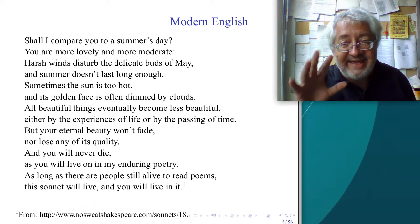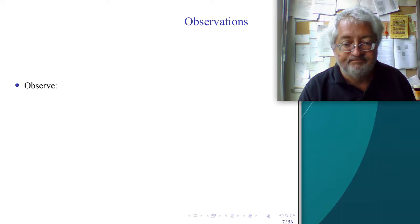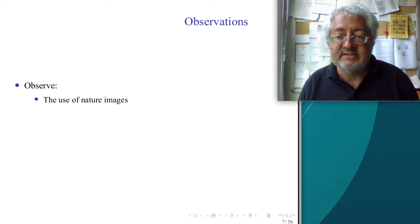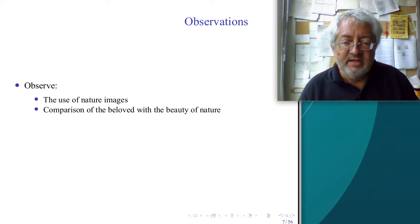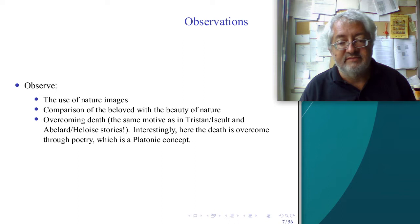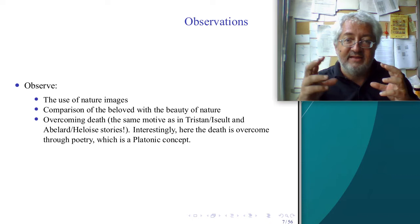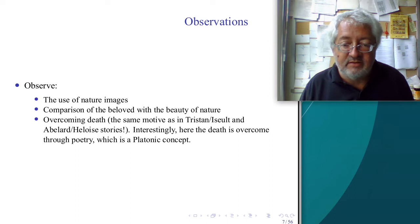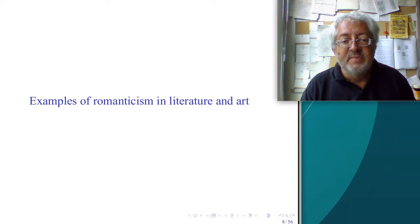This is a very platonic approach to love: who cares if we age? What doesn't age is the poem. Another thing to notice is the use of nature images — romantic love has to do with nature, comparison of the beloved with the beauty of nature, and overcoming death. In Tristan and Isolde and Abelard and Eloise, death was overcome by dying, hoping love continues after death. Here death is overcome through poetry — a very platonic concept.